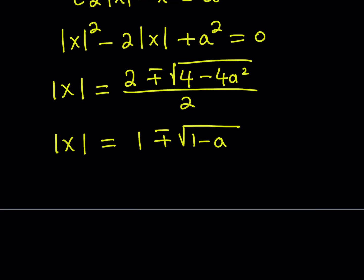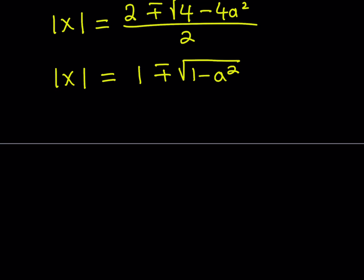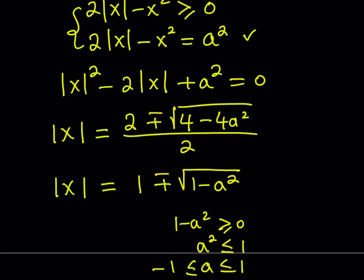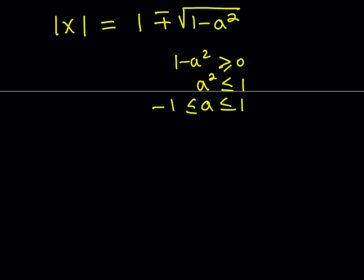After simplification we get |x| = 1 ± √(1 - a²). This gives four potential solutions because of the ± sign. For real solutions, the expression inside the radical must be non-negative: 1 - a² ≥ 0, which means a² ≤ 1, so -1 ≤ a ≤ 1. Since we already assumed a > 0, we consider 0 < a < 1 strictly.